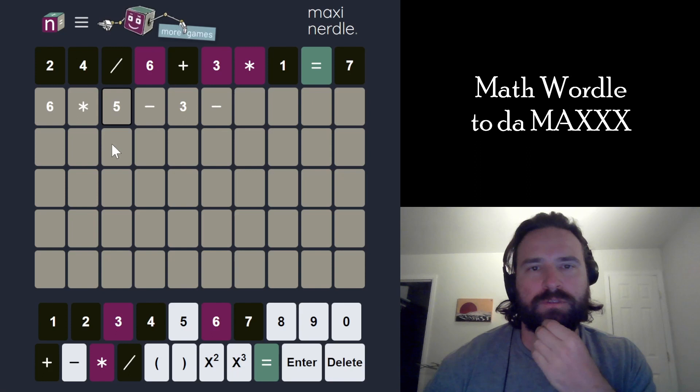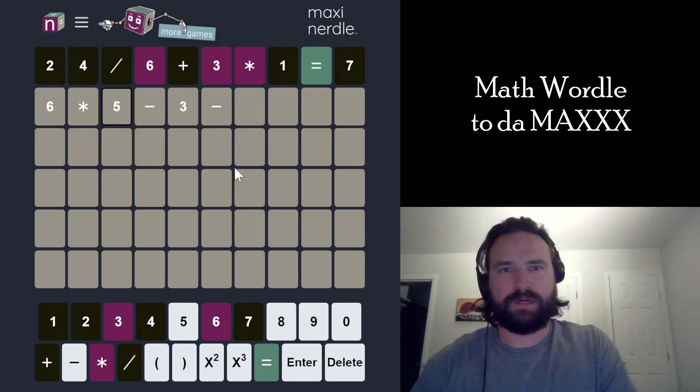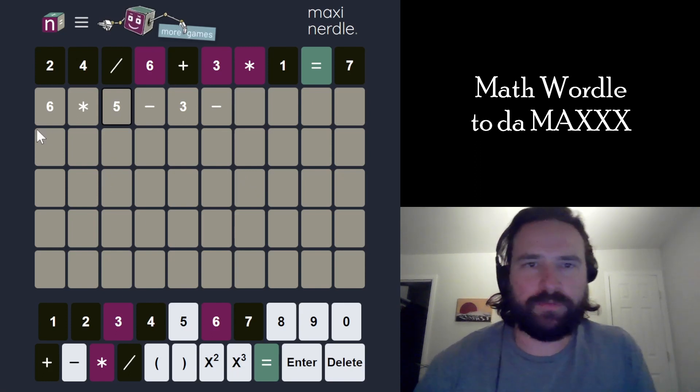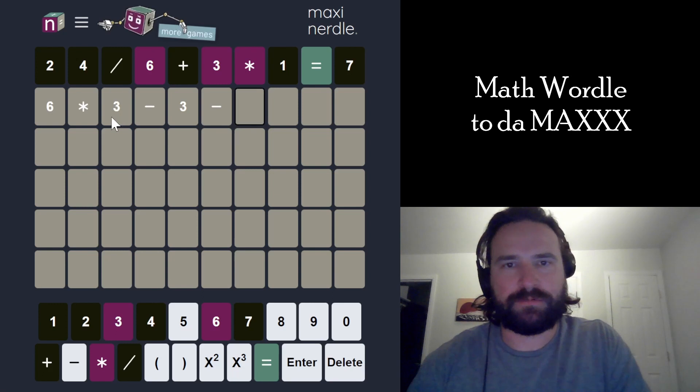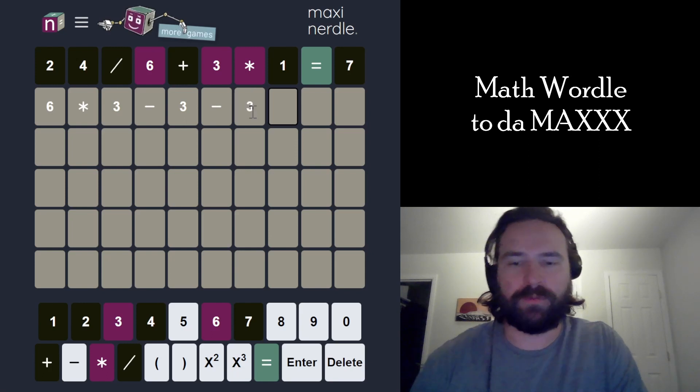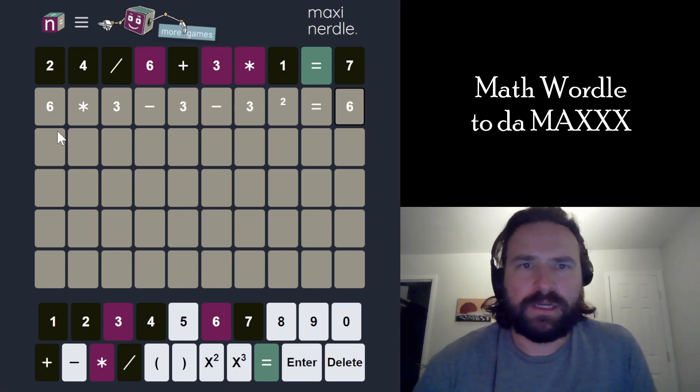8 squared is 64. 6 times 5, it's like whatever number I use to multiply here is like the number that wants to be squared. 6 times 3 minus 3 minus 3 squared equals 6 probably. I don't know. I guess that's probably going to play something. And it could be the answer.